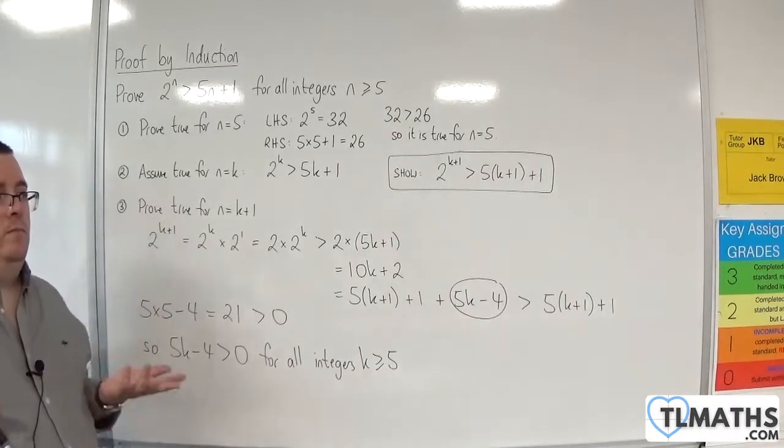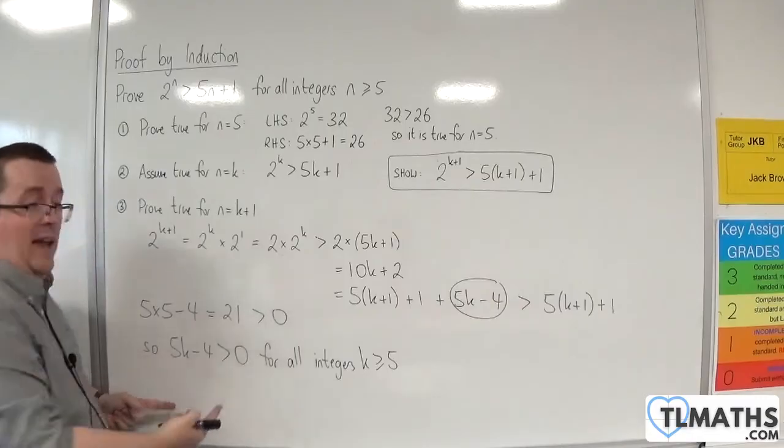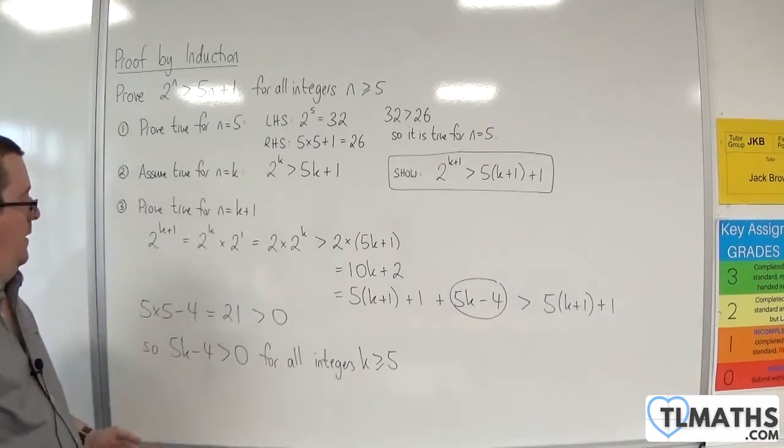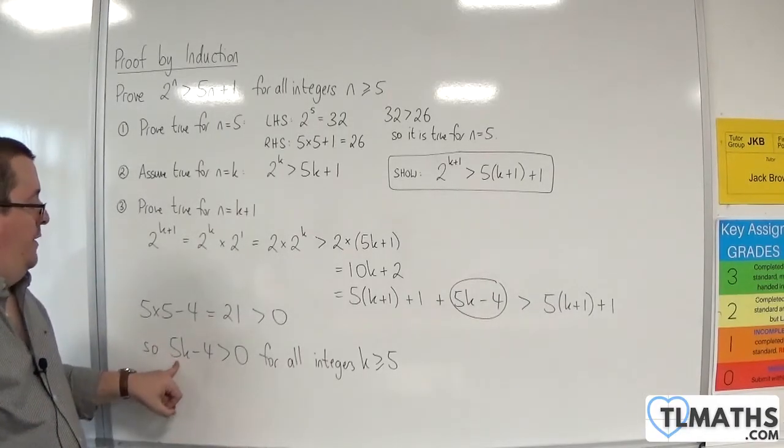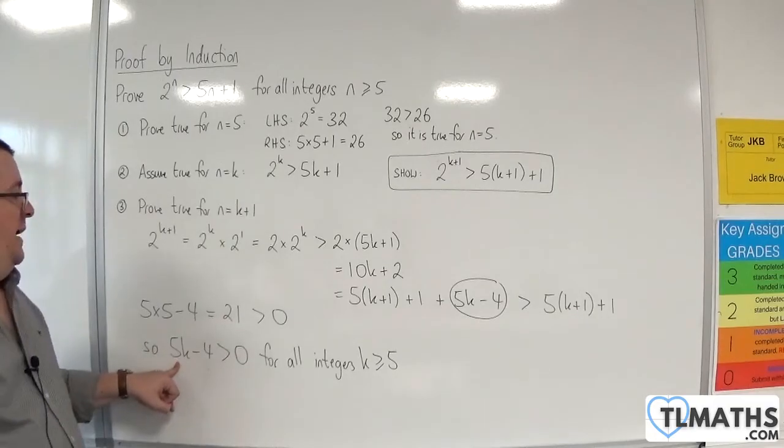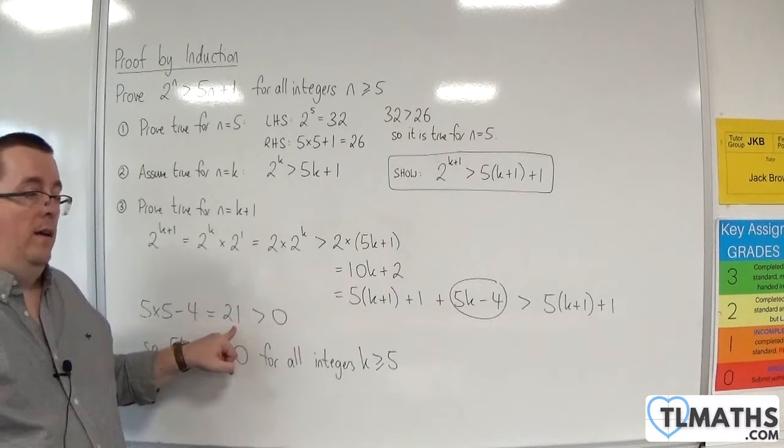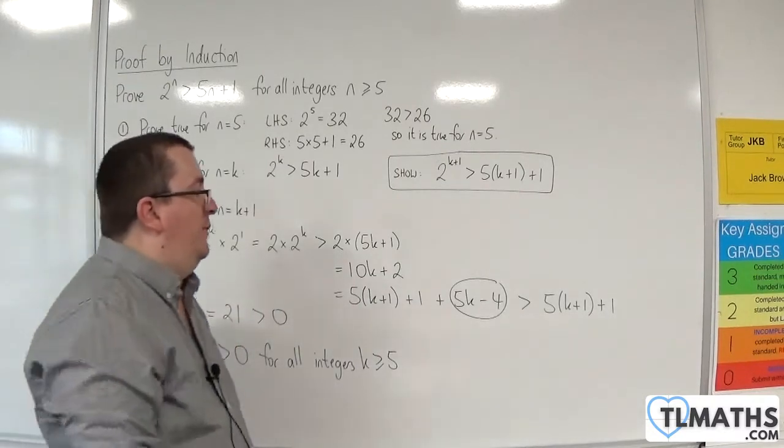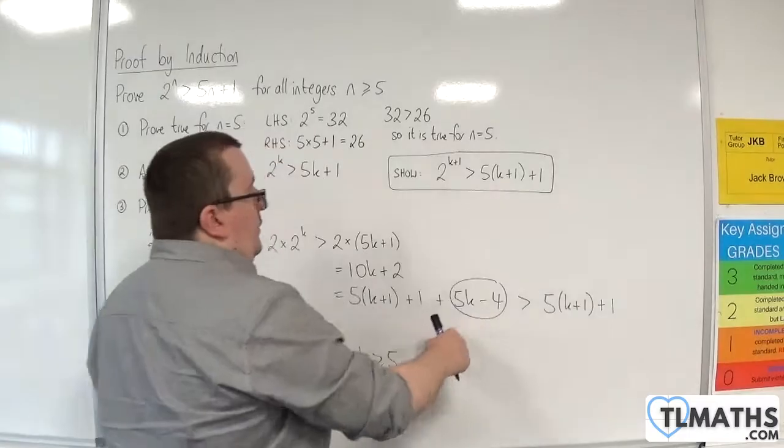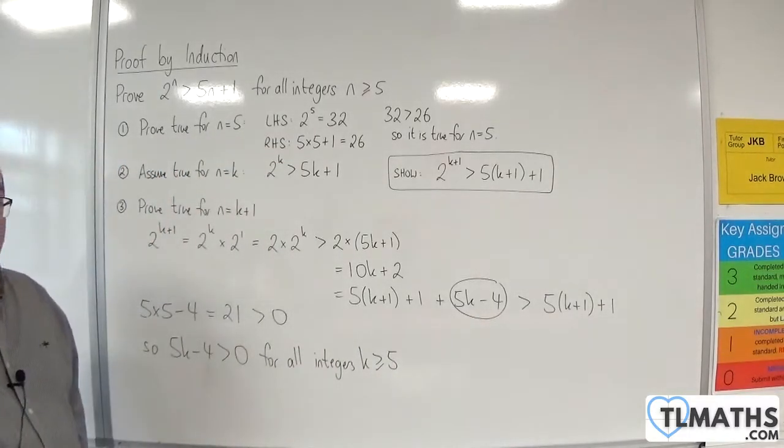Now, you might be going, right, is that right? Well, 5k minus 4 is a linear function. It's got a positive gradient of 5, so it is always going to be increasing. So, if that is, well, starting at 21, then clearly it's only going to get bigger and bigger and bigger. It's never going to go smaller. And so, that will always be greater than 0.